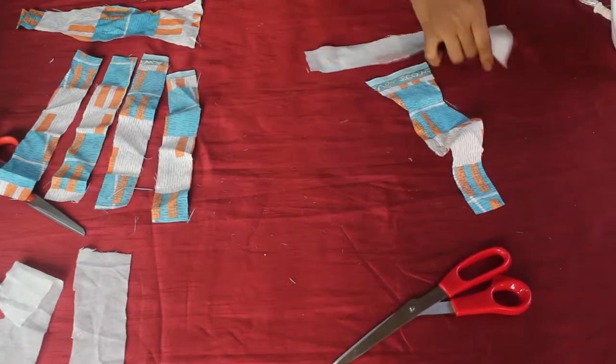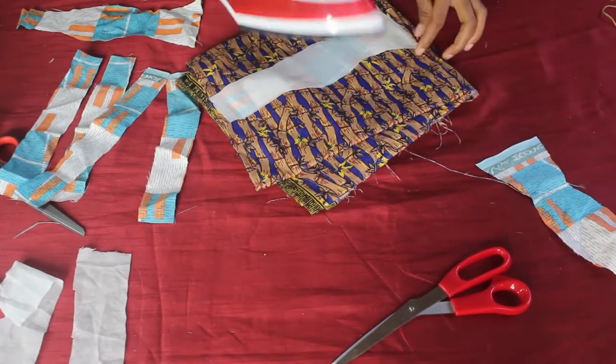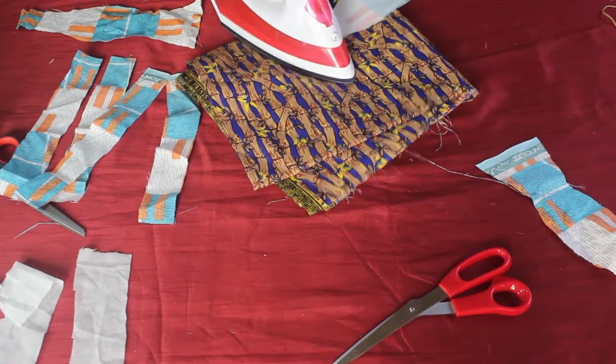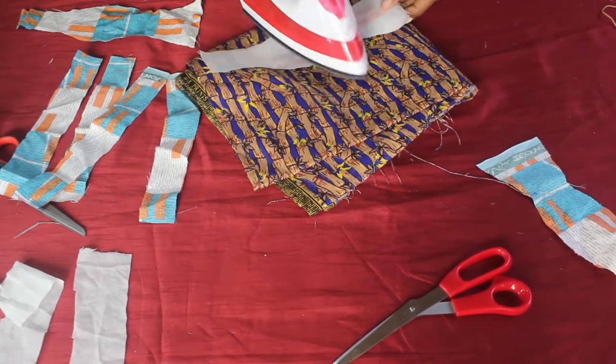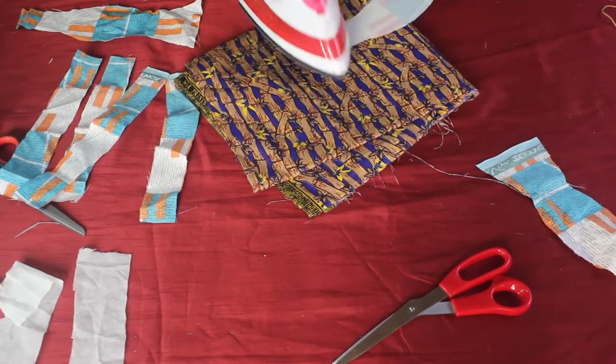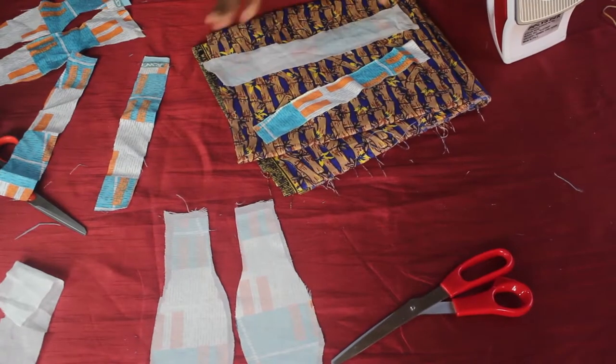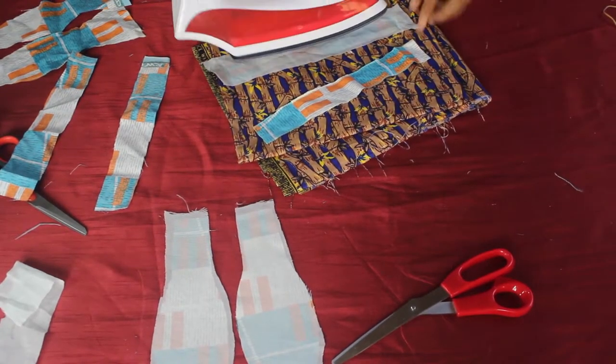Then I'm going to iron it to seal it together. As I'm doing that I'm also ironing the rest of the fabric, cutting out loose threads and excess interfacing fabric.